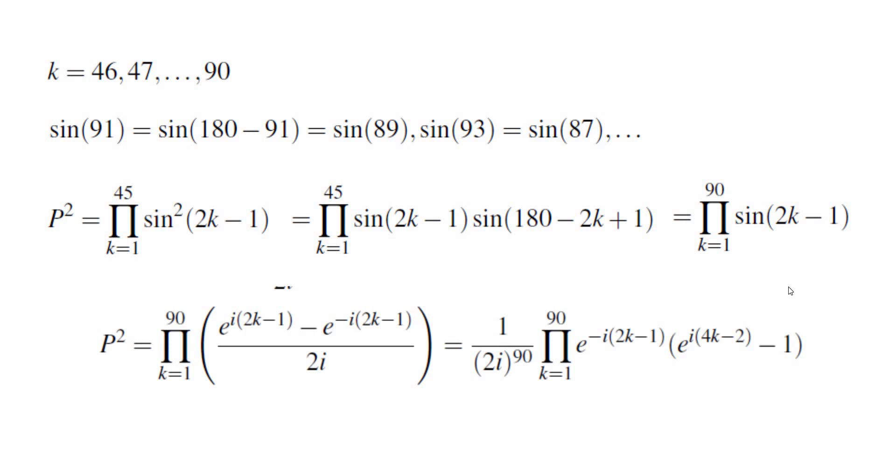Now I'm going to repeat the same thing I did: P² equals the product where we replace every sine by the formula (e^(iθ) - e^(-iθ))/2i. Factor all the 2i's and factor the negative exponents, and this is what you end up with.